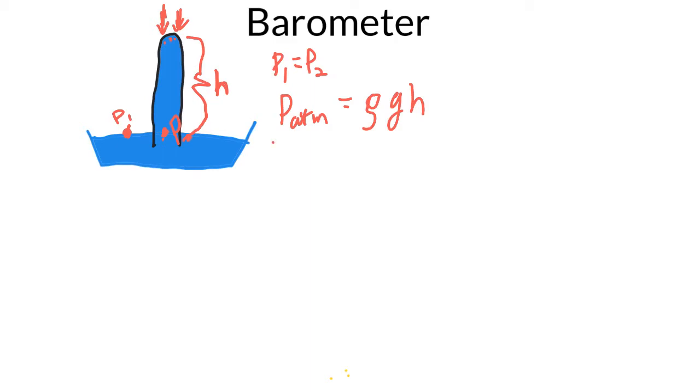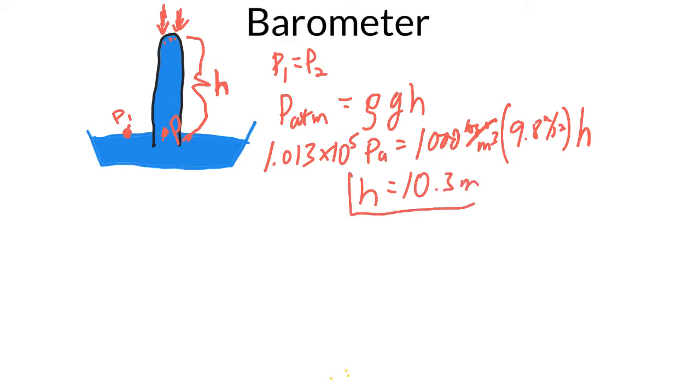So one atmosphere we know is 1.013 × 10^5 pascals, and we know water is 1,000 kilograms per meter cubed, little g is little g, and we have h. So we're going to solve for h and what you get when you do the math here is you get an h of 10.3 meters.